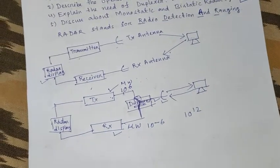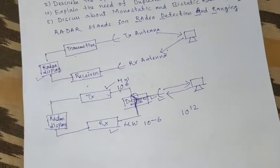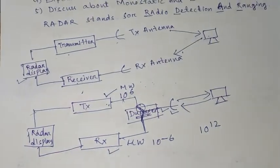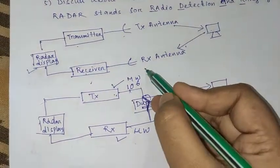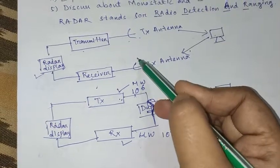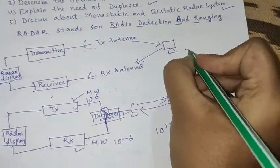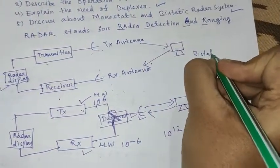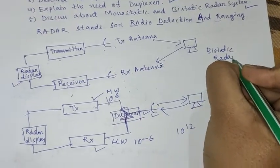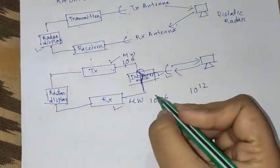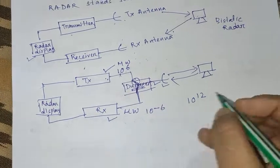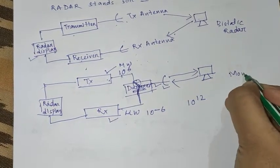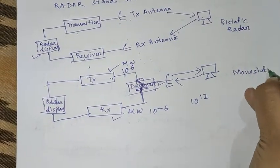Next, we discuss monostatic and bistatic radar. The block diagram with two antennas is known as bistatic radar, and the block diagram with single antenna is known as monostatic radar.